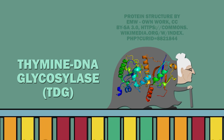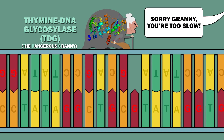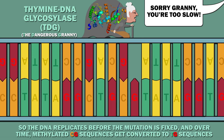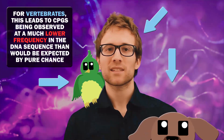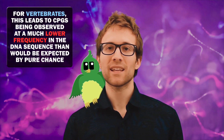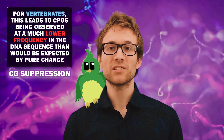Thymine DNA glycosylase, or TDG, replaces T's from TG mismatches. However, it isn't fast enough to keep up with the rate of rapid nucleotide mutation. So the DNA replicates before the mutation is fixed, and over time, methylated CG sequences get converted to TG sequences. For vertebrates, this leads to CpGs being observed at a much lower frequency than expected by pure chance — a phenomenon called CG suppression.